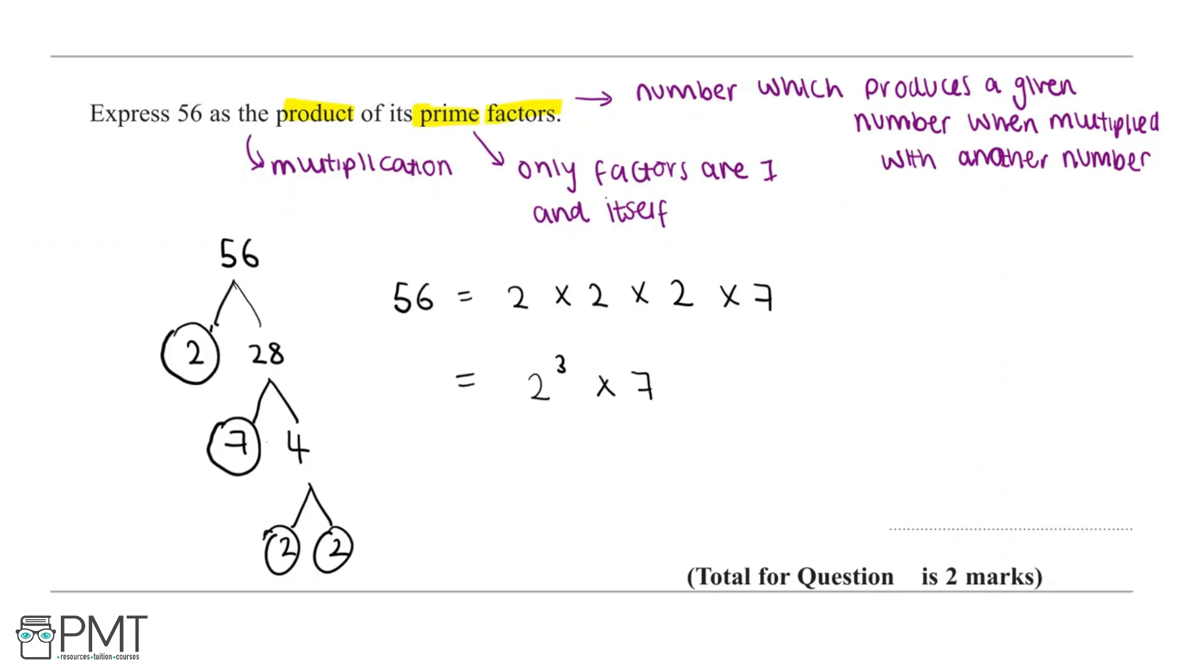So for our answer then, we can say that 56 equals 2 to the power of 3 times 7.